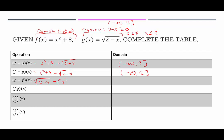For g − f, we get √(2 − x) − (x² + 8). Distributing the subtraction: √(2 − x) − x² − 8. We can rearrange but there are no like terms. The domain remains the same with the same restrictions. The product function is (x² + 8)·√(2 − x), which distributes to x²√(2 − x) + 8√(2 − x). Same domain restrictions apply: (−∞, 2].